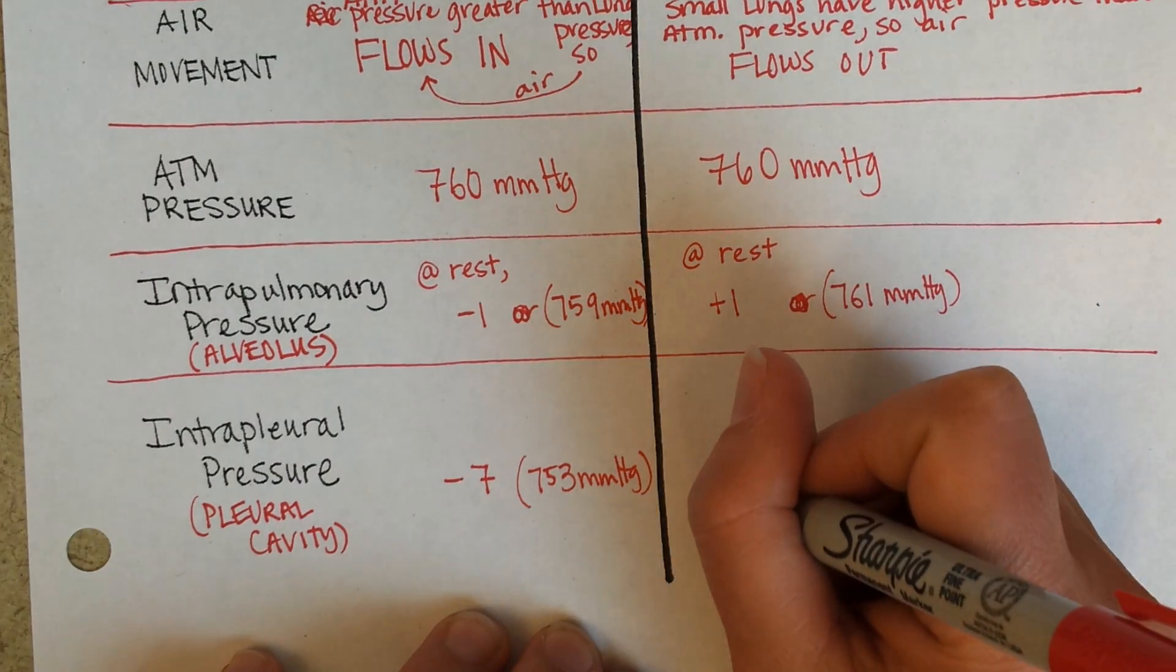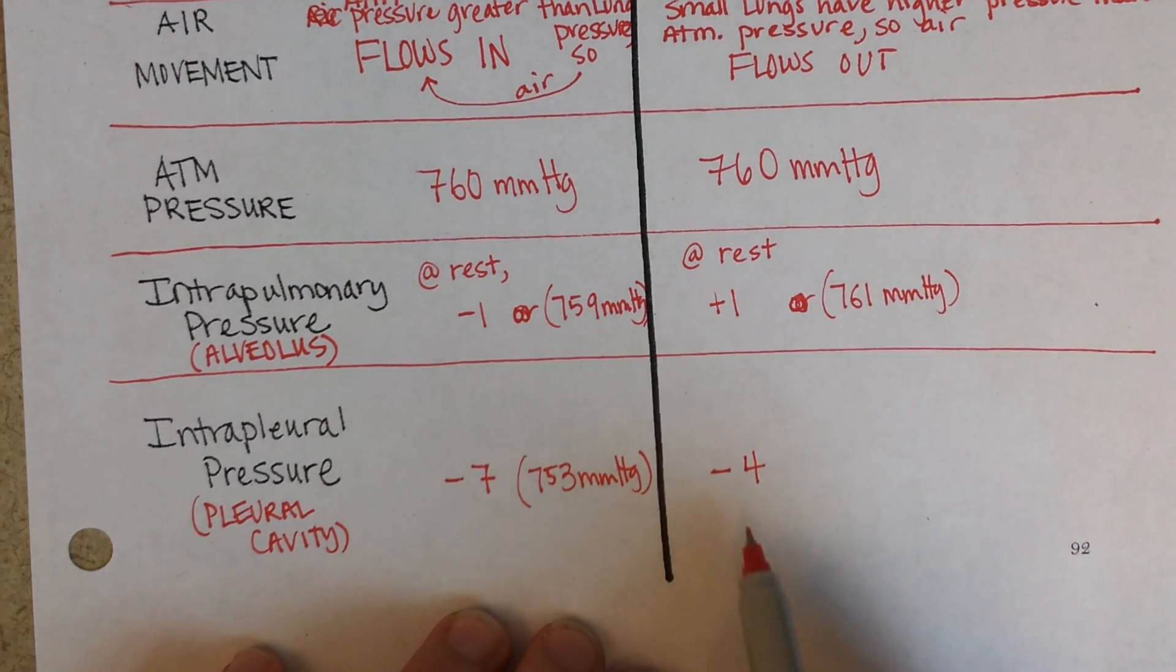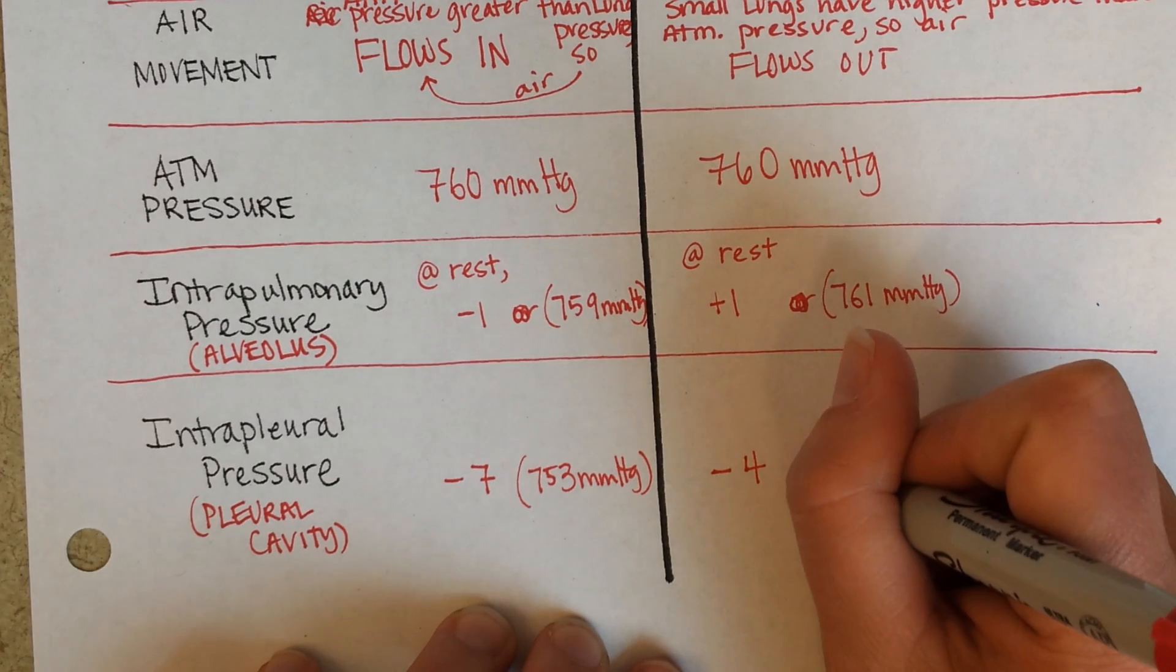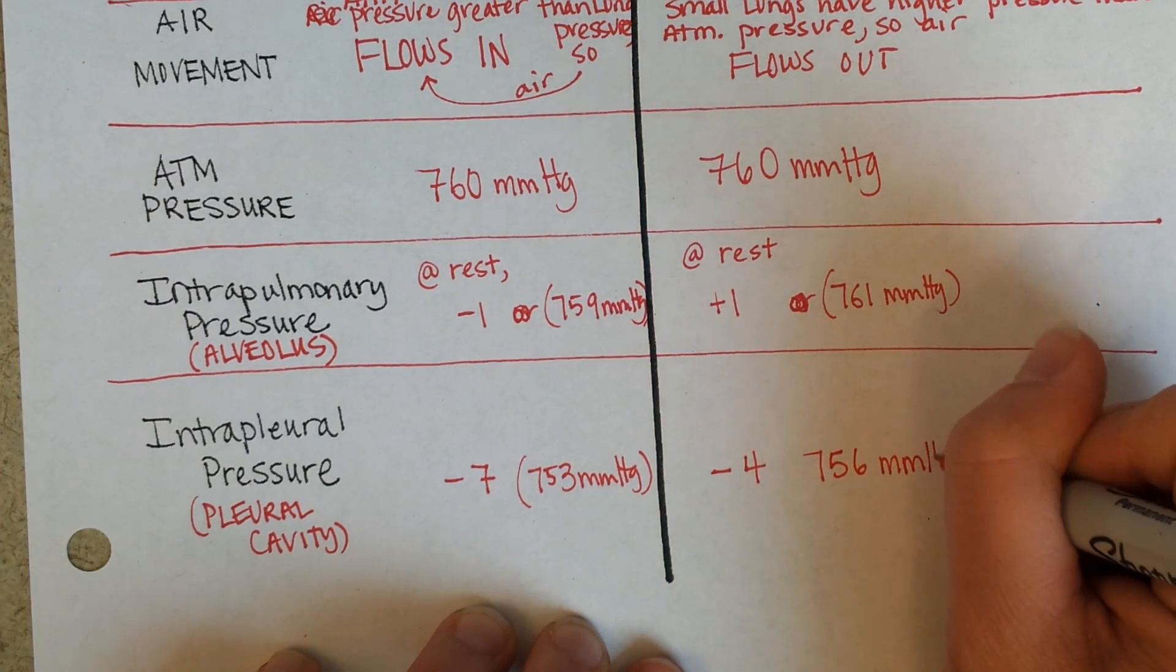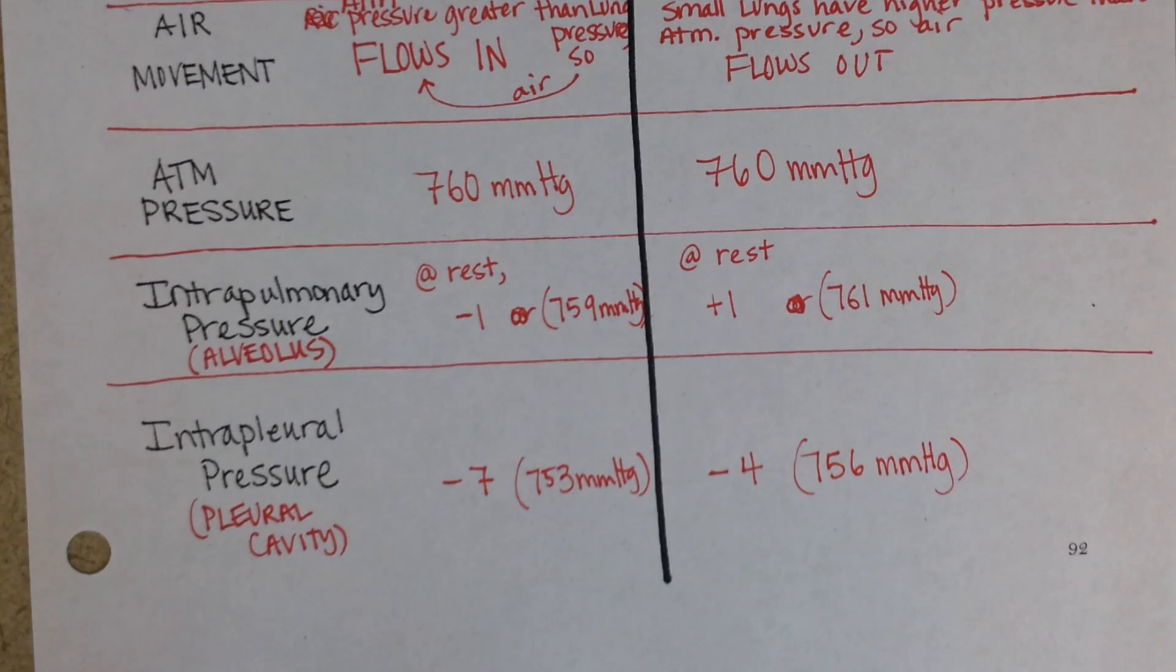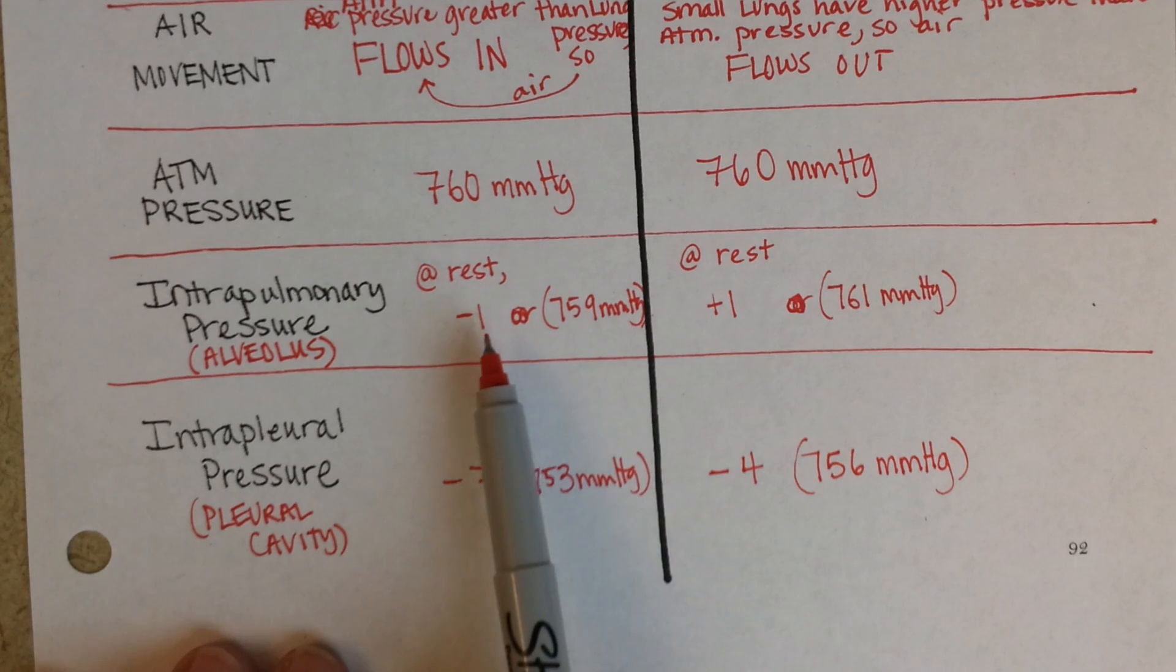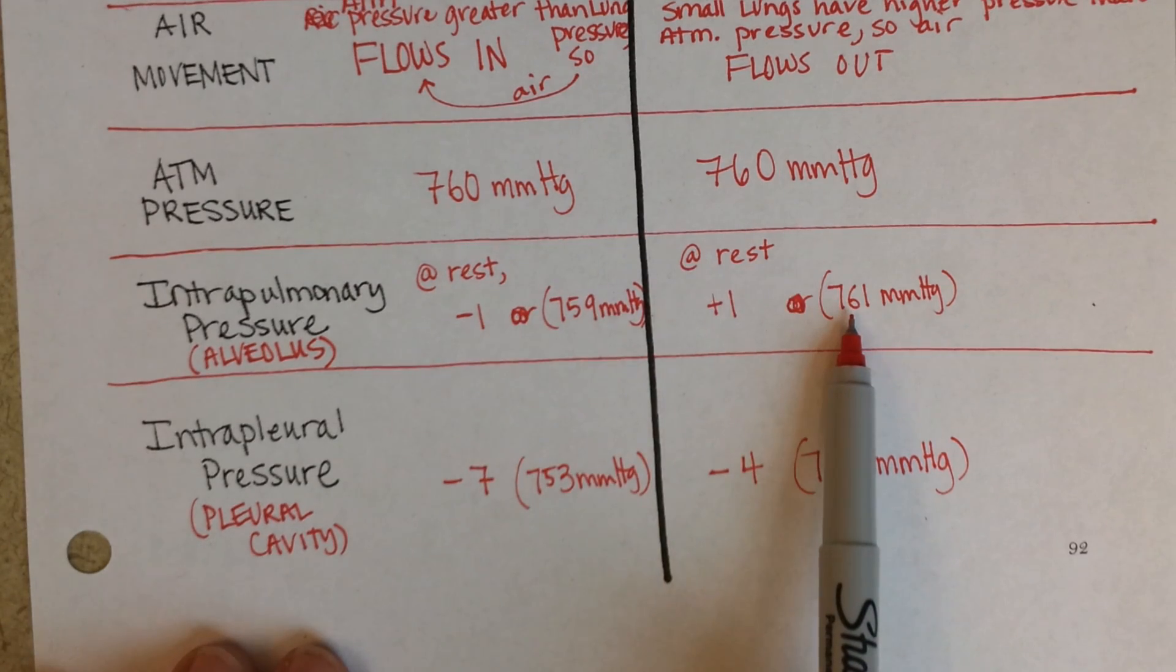And then when you exhale, it might go up to minus 4. Notice it's still less than atmospheric pressure. So it's not like you could breathe out so much that you collapse your lungs because you couldn't get this number to a positive number. So when you breathe in, the pressure in the alveoli goes down to 759. When you breathe out, it goes up to 761.